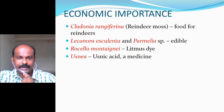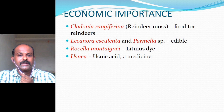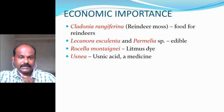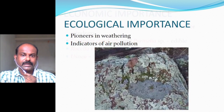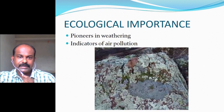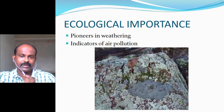Economic importance: Cladonia rangifera, also called reindeer moss, is used as food for reindeer. Lecanora esculenta and Parmelia are edible species. Roccella montagnei is used as a litmus dye, and Usnea is a source of usnic acid, which is a medicine. Ecological importance: lichens are pioneers in the weathering process — the breaking of rocks and soil formation — and they are also indicators of air pollution, being found only in places where pollution is low or absent.